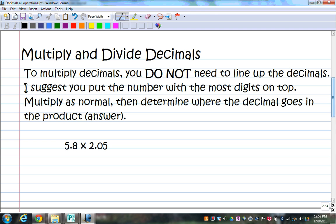Because that can confuse students when you have a larger number on the bottom. I shouldn't say larger number, because technically it could be a smaller number. But the number with more digits on the bottom, that tends to confuse students. So here, I have 2.05. There's three digits in that one. 5.8 is two. So I'm going to put 2.05 on top. Again, I'm not going to line up the decimals. 5.8 goes on the bottom.